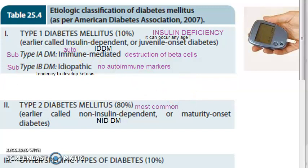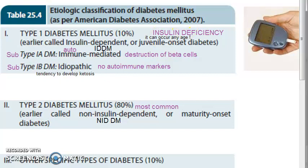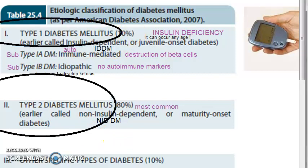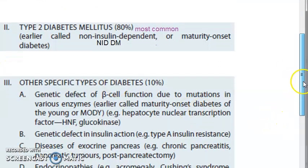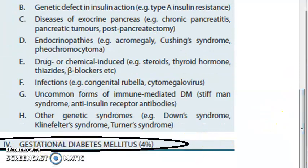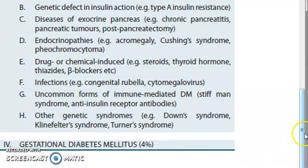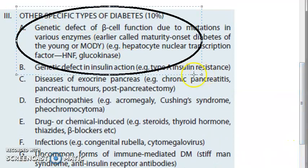Let us move on to type 2 diabetes mellitus in the next video so we don't overload you. To revise: in the etiological classification we have type 1 diabetes mellitus, type 2 diabetes mellitus, other specific types of diabetes, and gestational diabetes mellitus. Let us briefly look at the other specific types of diabetes mellitus.